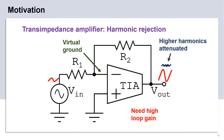This slide shows an amplifier in negative feedback. For negative feedback to work properly, the open-loop gain must be high. Moreover, any higher harmonics which might be generated due to the non-linearity of the amplifier also get suppressed by the open-loop gain. Thus, we require high open-loop gain from our amplifier.